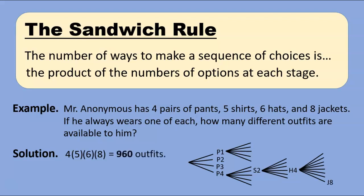It's important to remember that behind every application of the sandwich rule lies a counting tree that justifies it. Every one of Mr. Anonymous's outfits corresponds to a path through the tree, and every path leads to a different outfit. This may seem too obvious to mention, but it won't always be the case, as we'll soon see.